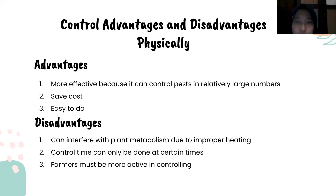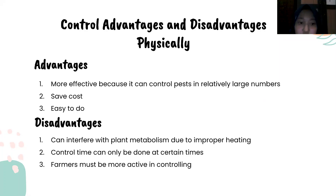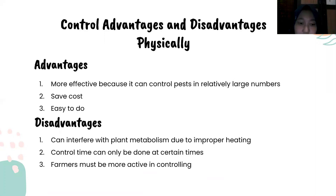For physical control advantages: it is more effective because it can control pests in relatively large numbers, and it is easy to do. For the disadvantages: it can disrupt plant metabolism due to improper heating, control can only be done at certain times, and farmers must be more active in the control process.